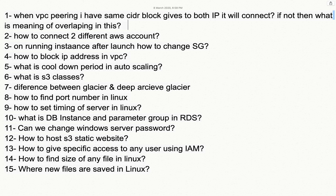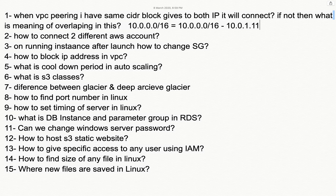For example, if you have two VPCs both with the value 10.0.0.0/16, if you try to connect these two, it will not work. Because once you peer them, you will not be able to identify which machine you are trying to reach. If you create a machine in each VPC with the same IP, you cannot distinguish them. That is why AWS does not allow connecting same CIDR values — this situation is known as CIDR overlapping.